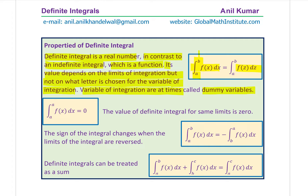That is also important to understand. Sometimes, especially when we will be proving the fundamental theorem of calculus, we might use values like f of t or some other variables, but that doesn't really matter much. The major value which affects the definite integral is the boundary condition a and b. That is property number one. Property number two is that the value of a definite integral for the same limits is zero — if you go from a to a, the answer is always zero. It's like an area with zero width — a rectangle with zero width has area zero.